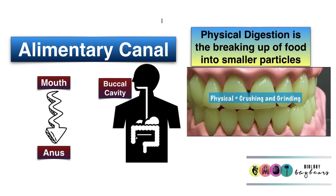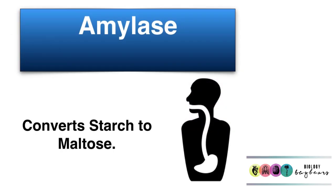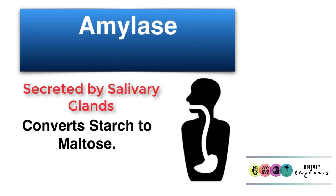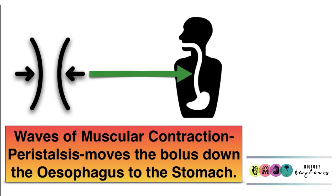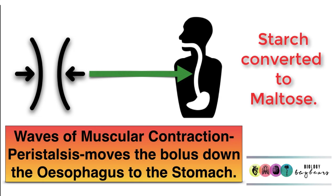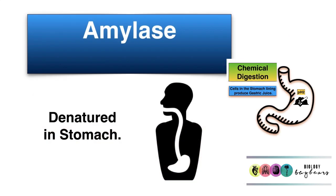Food enters the alimentary canal by entering into the mouth, where it is immediately physically broken up using the teeth and then chemically acted upon by amylase, secreted by the salivary glands, which converts starch to maltose. Amylase works at a pH of approximately 7. The ground-up food, now a ball or bolus, is swallowed and passes down the esophagus, where waves of peristalsis shunt the food onwards while amylase continues acting upon the starch. The bolus eventually reaches the stomach, where the very low pH denatures amylase.